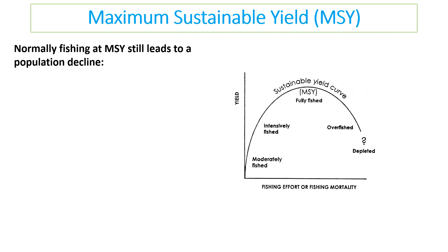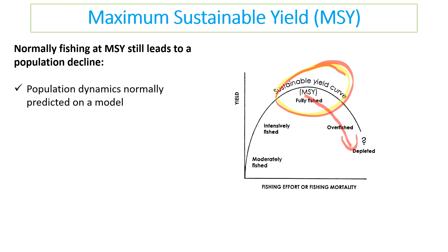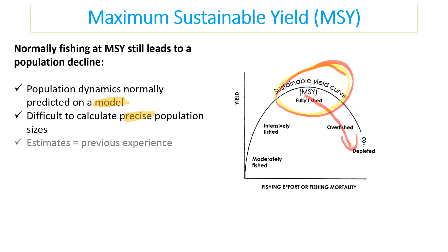The idea of maximum sustainable yield has led to problems, because many people feel that fishing at this level gives the most catch with no damage — but that isn't true. Normally, even when fishing in a maximum sustainable yield area, the population still drops. The reason is that population dynamics are predicted using models, and as you know from module one, a model is a simplified system. It is therefore difficult to calculate the precise size of populations, and estimates are based on previous experiences.